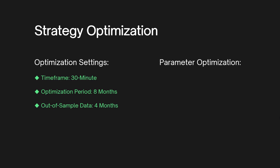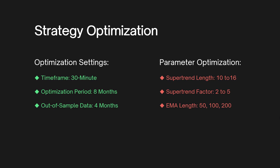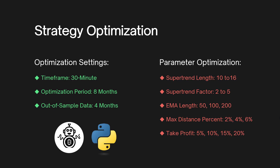Here are the parameters we'll be adjusting during the optimization process. First, supertrend length: we'll test lengths from 10 to 16 to find the best one for catching market trends. Second, supertrend factor: we'll test factors from 2 to 5 to fine-tune it. Third, EMA length: we'll test the 50 EMA, 100 EMA, and 200 EMA to see which one works best for trend identification. Fourth, max distance percent: this ensures the price must exceed the EMA by a certain percentage before triggering an entry signal, filtering out minor breakouts and reducing false signals — we'll optimize at 2%, 4%, and 6%. Fifth, take-profit levels: we'll optimize at 5%, 10%, 15%, and 20% to determine the most profitable and realistic target for different market conditions. We'll use FreqTrade, a trading bot written in Python, to run the optimization.